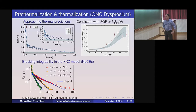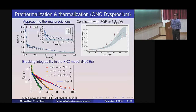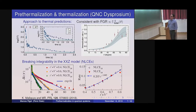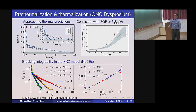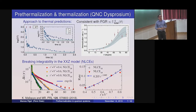Motivated by that, with my graduate student Krishna, we looked at breaking integrability in the XXX model using a numerical linked cluster expansion. We saw something very fast, some exponential decays, and extracted rates. Plotting the rate as a function of the integrability-breaking strength, we again got something very consistent with G-squared, or Fermi-Golden rule. That's the background for what I'm going to tell you next.